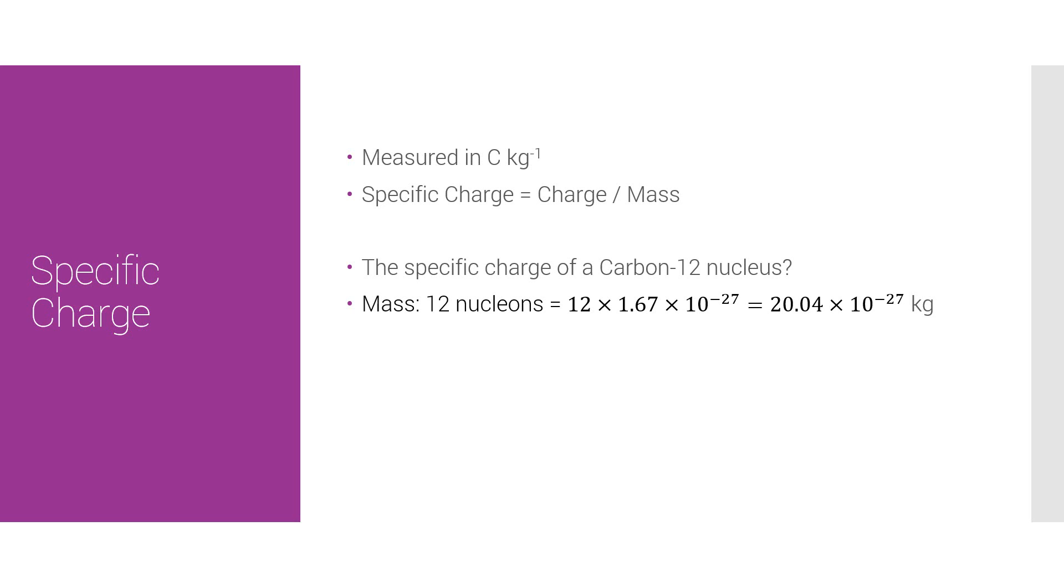Next, let's calculate the charge, and because this is just the nucleus, we don't take into account the electrons. So there are 6 protons in the nucleus, so that's 6 times the charge of a proton, which is 1.6 times 10 to the minus 19. That value will also be given to you in the datasheet.